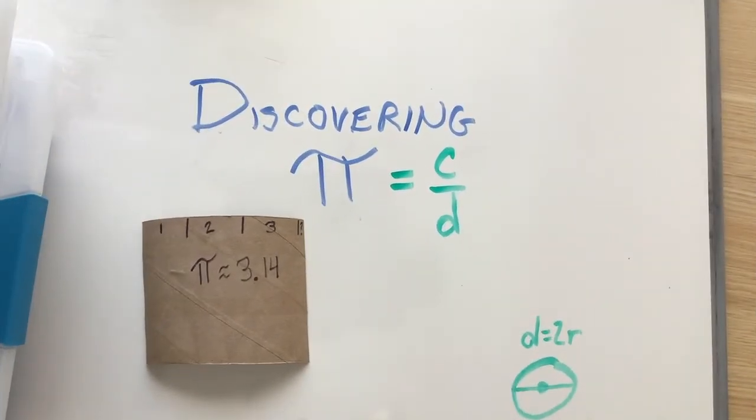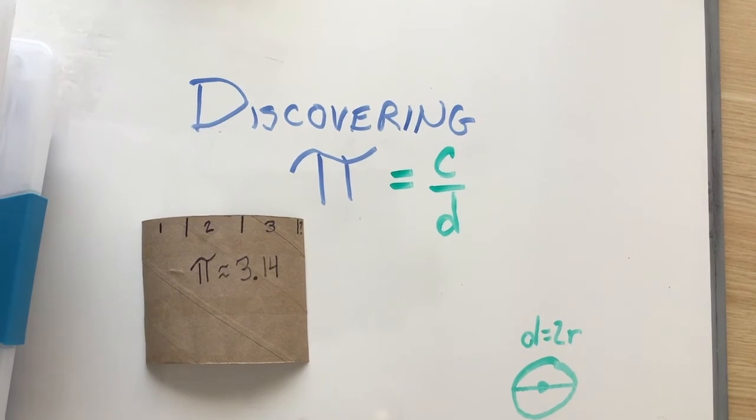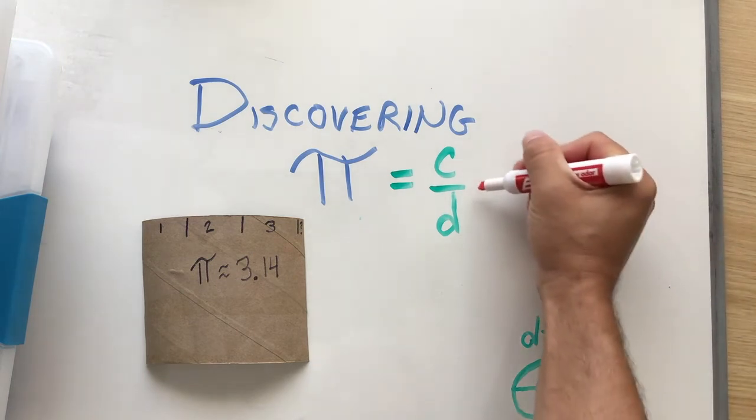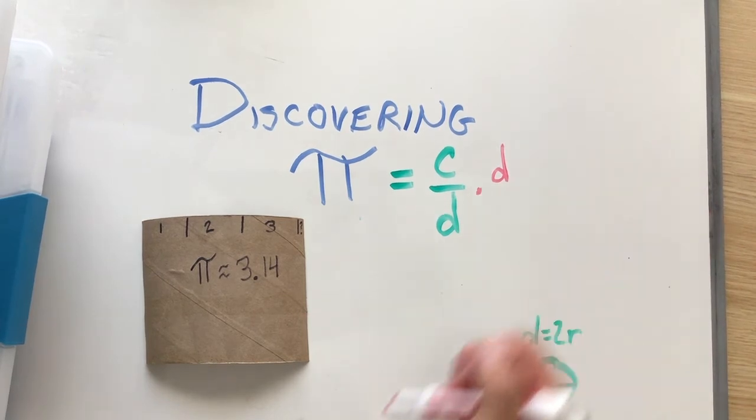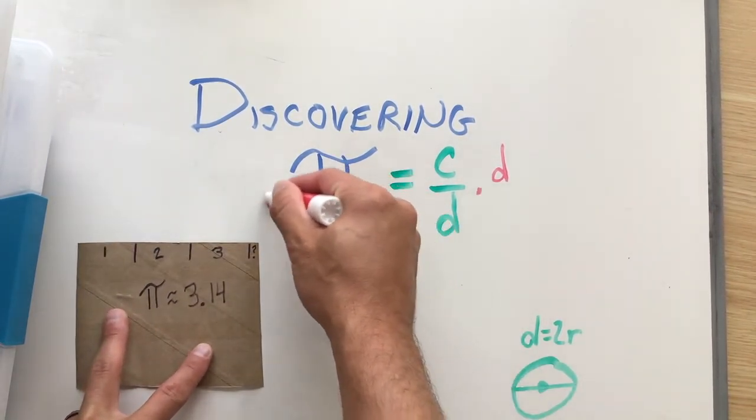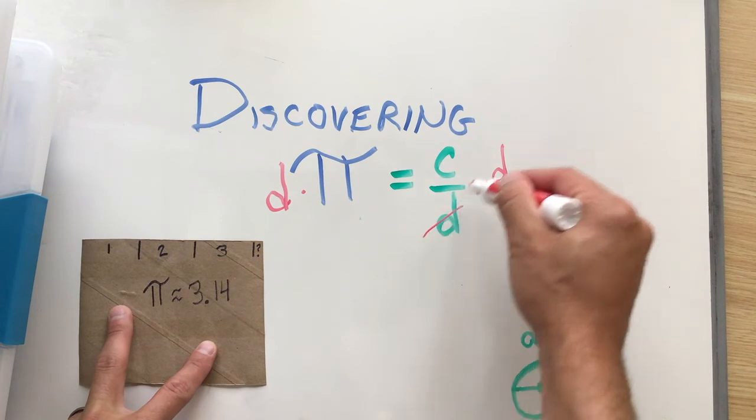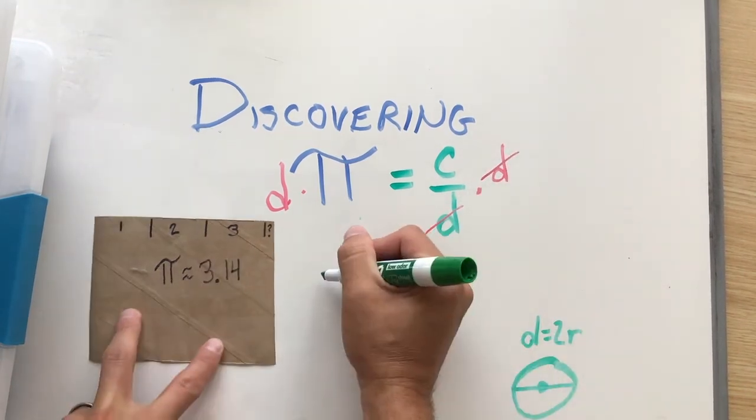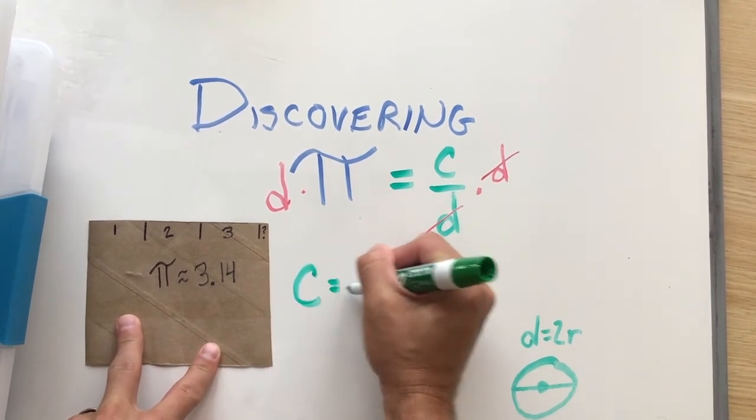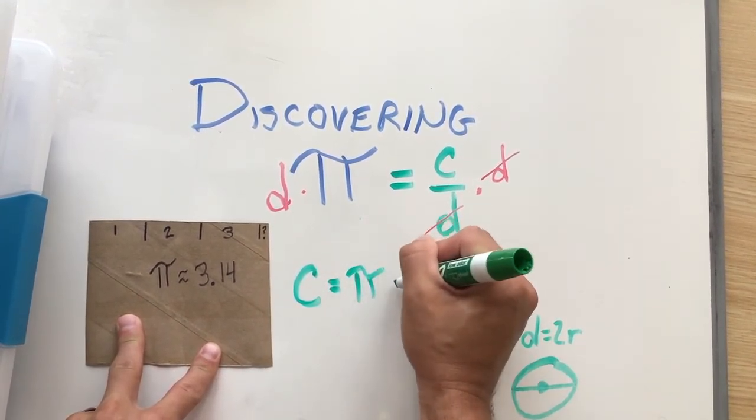So how can pi be useful to us mathematically? Well, since pi is a constant and it's always about 3.14, we can use it to solve for the other variables. So to make the circumference and the diameter formula useful to us, we're going to use inverse operations. And I'm going to get circumference by itself. Since the circumference is divided by diameter, I'm going to multiply both sides by the diameter using inverse operations. And that gives us a formula that we can use to solve for circumference if we can measure the diameter.